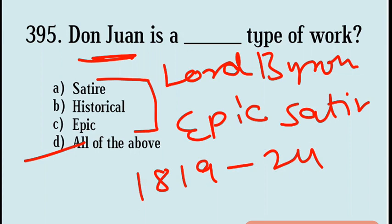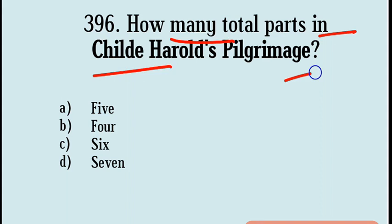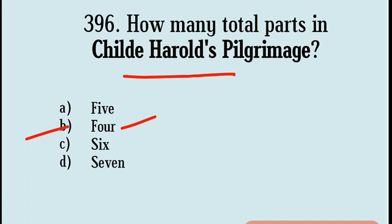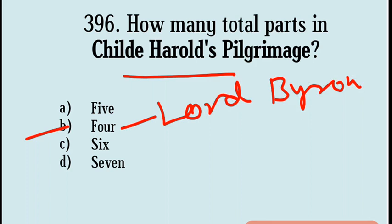Next question: How many total parts are in Childe Harold's Pilgrimage? Options are 5, 4, 6, 7. Correct answer: Option B, 4 parts. Childe Harold's Pilgrimage is written by Lord Byron.